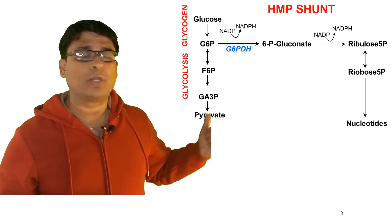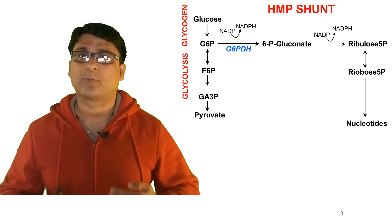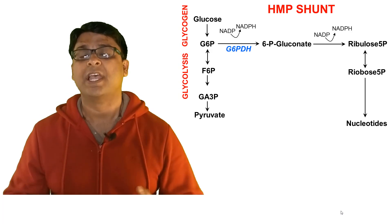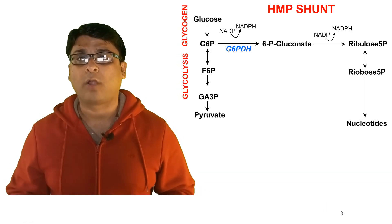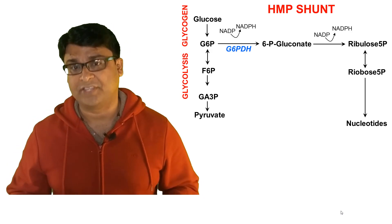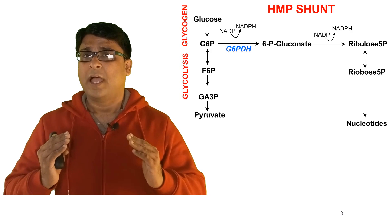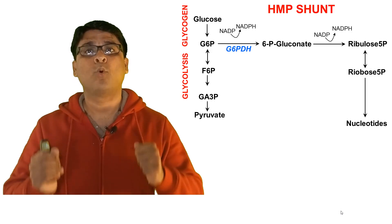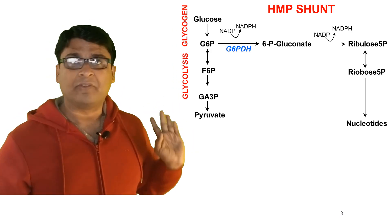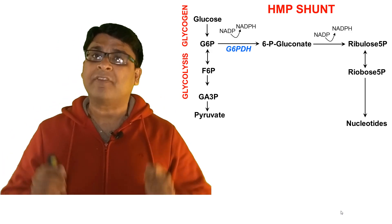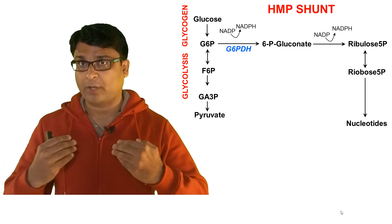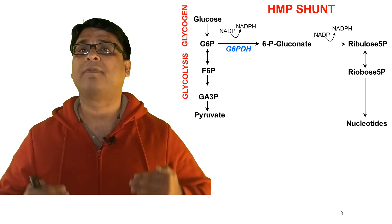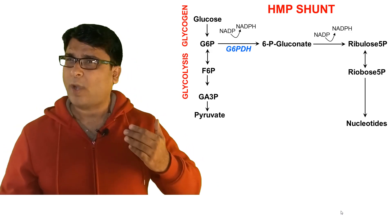Moving forward, 6-phosphogluconate is again acted upon by another dehydrogenase, producing another NADPH molecule, and it forms ribulose-5-phosphate, which is converted into ribose-5-phosphate. Ribose-5-phosphate is a pentose sugar and is routinely used for nucleic acid synthesis and nucleotide synthesis. So by now you should understand that one end product of HMP pathway is ribose-5-phosphate, which is required for nucleotide synthesis.